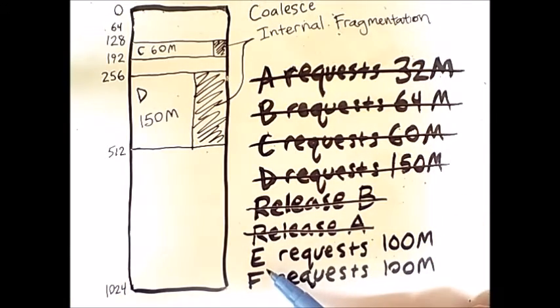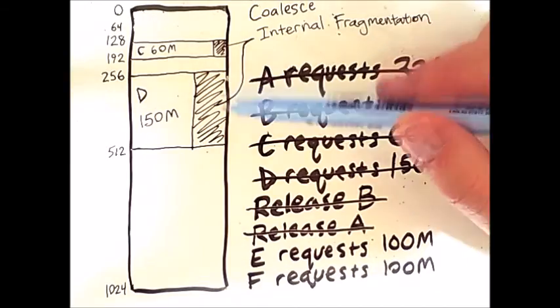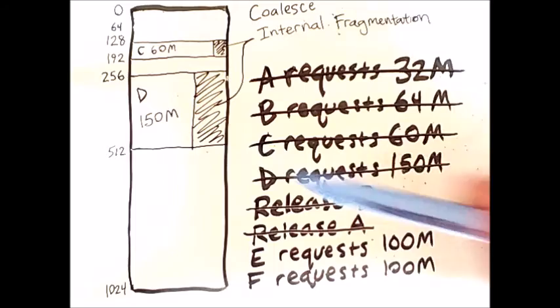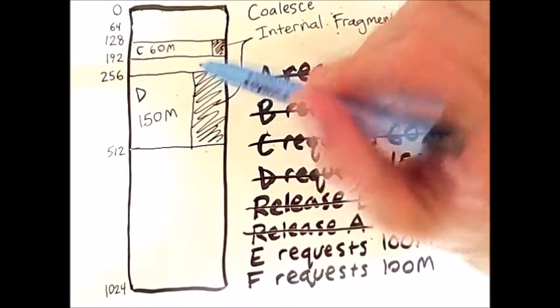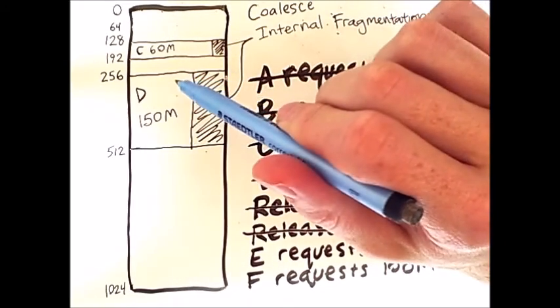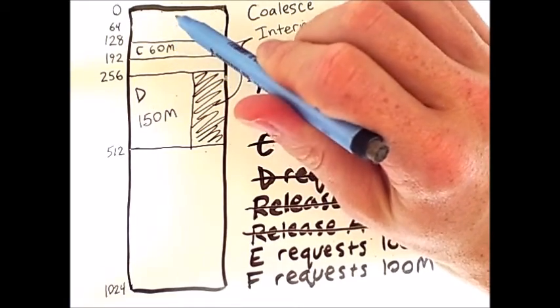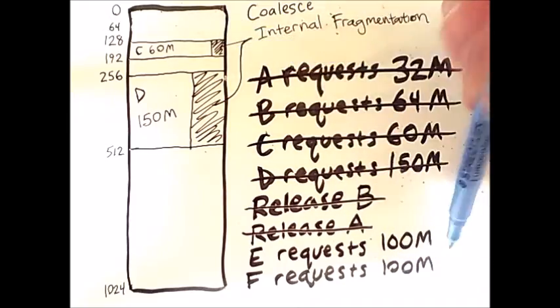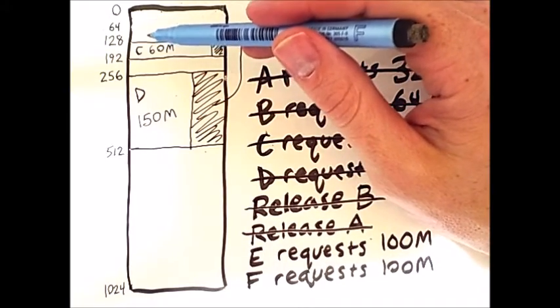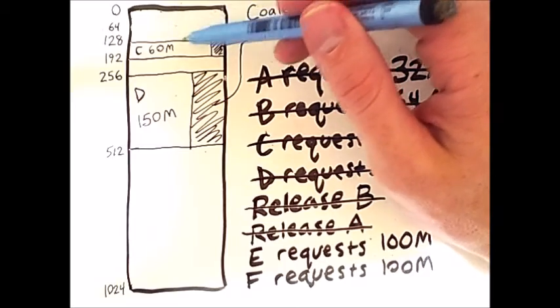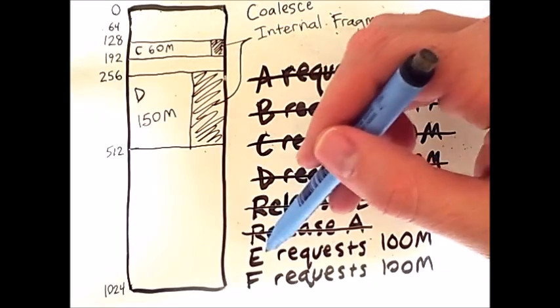Now, when E makes a request for 100 megabytes, we will go through our usual process. We start in the middle and then go up because 100 is less than 512. 100 is less than 256, so we go up again. 100 is less than 128, and we go up. And because 100 is between 64 and 128, we can actually use this newly coalesced region of memory to store process E.